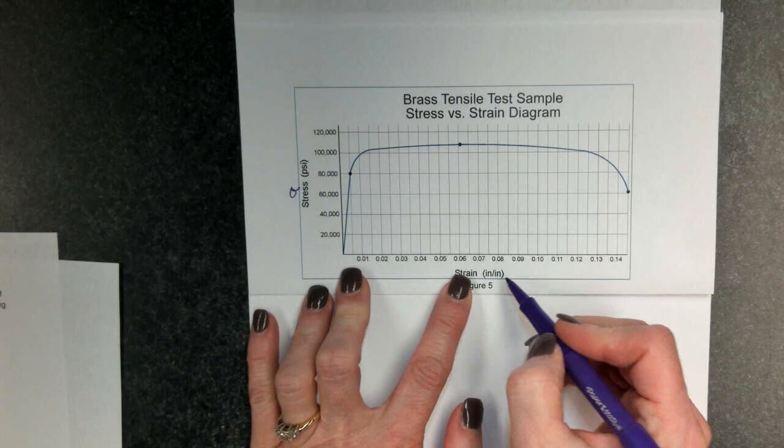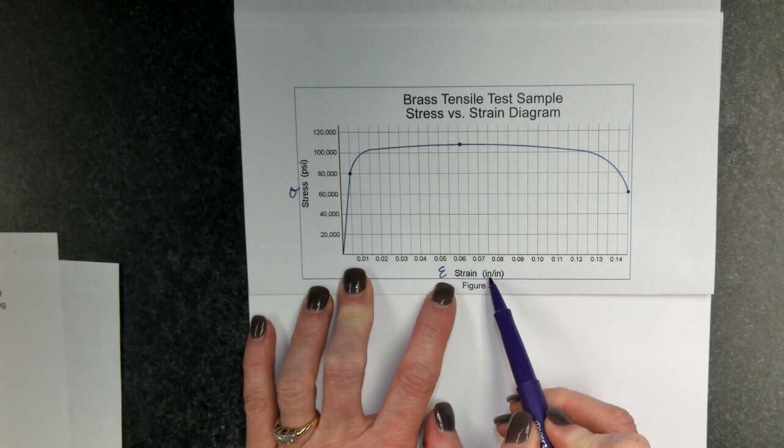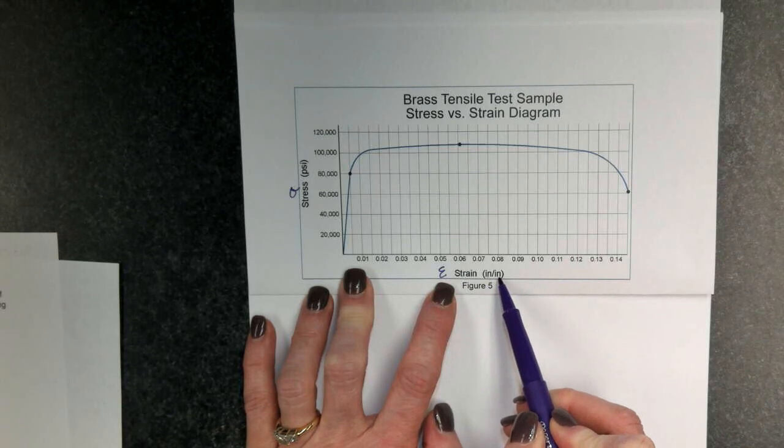And the strain, notified by epsilon, is given in inches per inch because it's the change in elongation divided by the original length of the material.